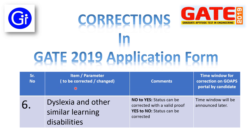The sixth parameter to be changed or corrected is dyslexia and other similar learning disabilities. This can be changed from No to Yes and Yes to No. If you want to change from No to Yes, the status can be corrected with valid proof only. And if you want to change from Yes to No, the status can be corrected. The time window for correction on the GOPS portal by the candidate will be announced later.